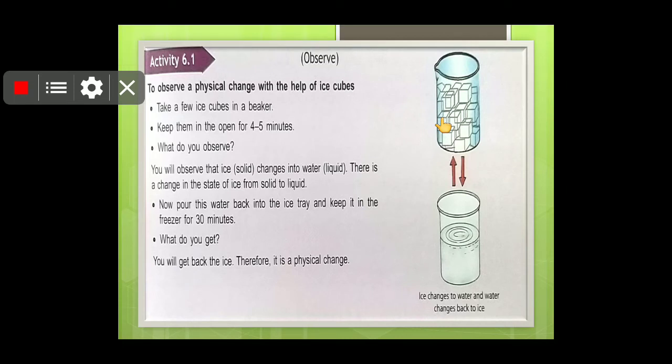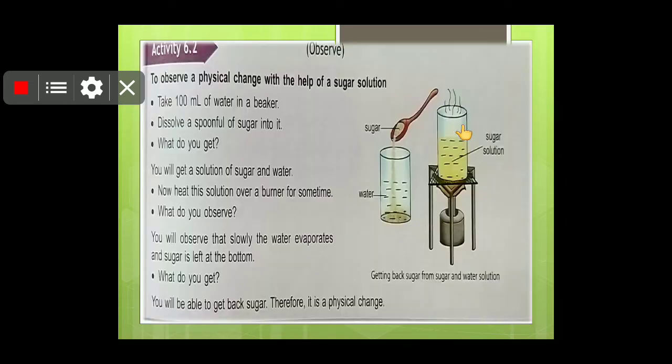So students, in this Activity 6.1, once the physical classes will be started, we are going to perform this activity in the class. So here you can see that in the beaker, ice is kept. And when you will keep the beaker at room temperature, so it will be melted. And once you will keep it back into the refrigerator, it will freeze again. So this is a physical change. Ice ki physical state mein change hua. It was first solid, then it changed to liquid, and after we put it back in the freezer, it became ice again.